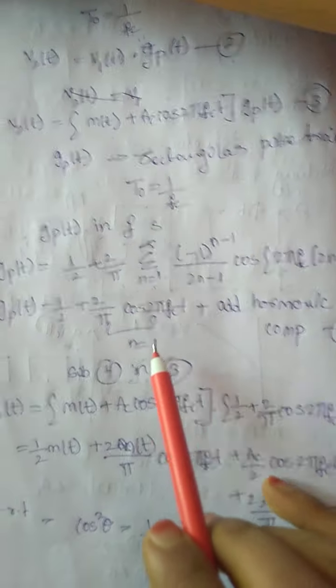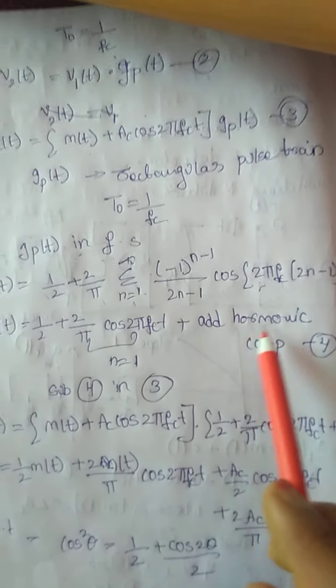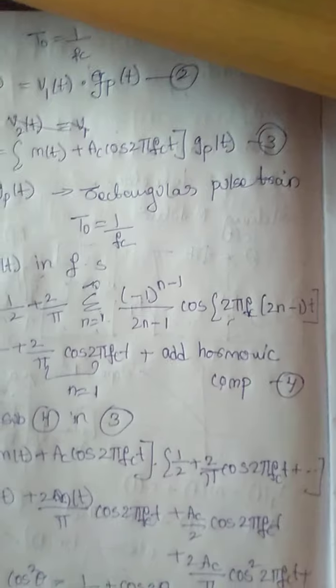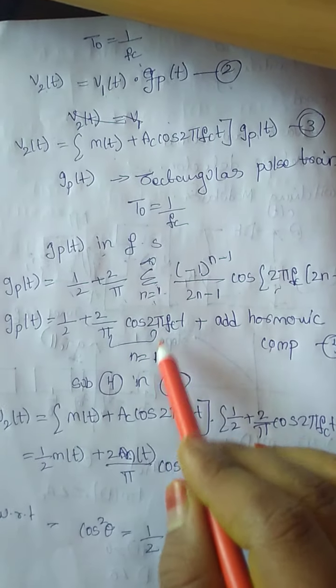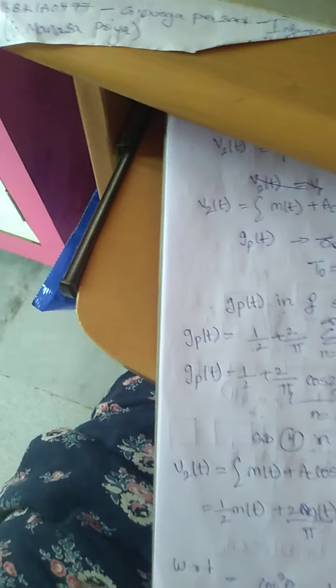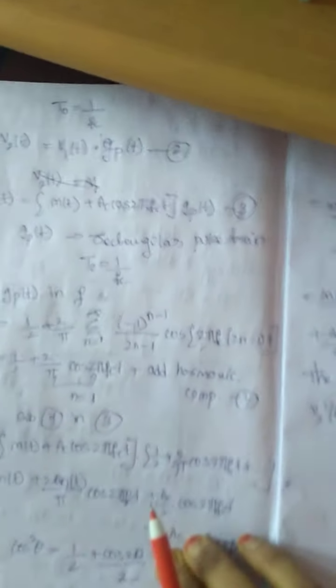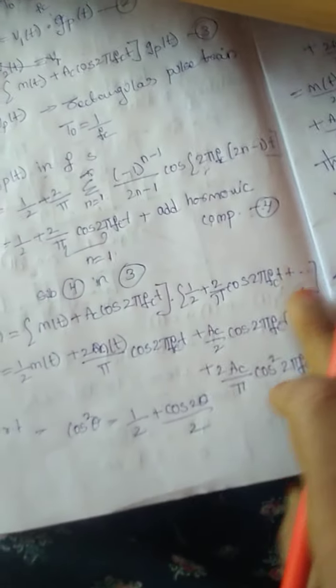For n = 1, the term is (1/2) + (2/π)·cos(2π·fc·t), plus we need to add the odd harmonic components. These harmonic components are used for generating more signals. Now this is equation four, and we substitute equation four into equation three — which is v2(t) = v1(t)·gp(t) — to expand the expression.